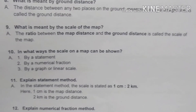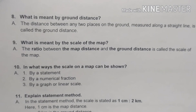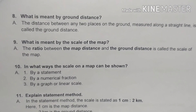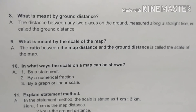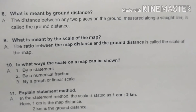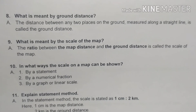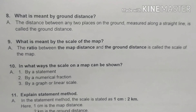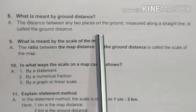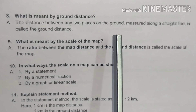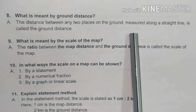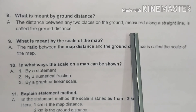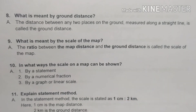Eighth question: what is meant by ground distance? The distance between any two places on the ground measured along a straight line is called the ground distance.